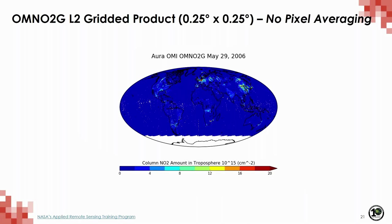Next is the OMNO2G product — a Level 2G daily global gridded product based on the OMNO2 product. This is a special Level 2 gridded product where the pixel data are binned into quarter-by-quarter-degree global grids. Each grid cell contains the data for any Level 2 scene with an observation time between UTC 0 and 24 for a given day — all data pixels that fall within this grid box are saved without averaging.